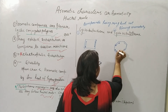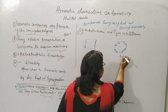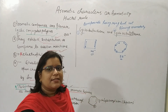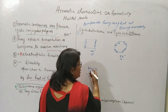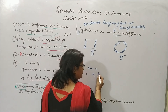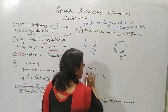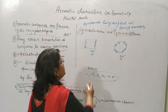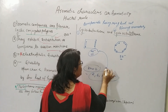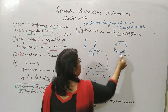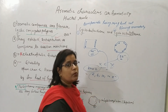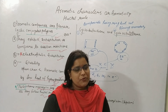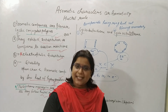In cyclotetraene, counting the pi electrons gives 8 electrons. Neither 4 nor 8 satisfies the 4n + 2 formula, so these two compounds do not show aromatic character. I hope you enjoyed my lecture. If you have any doubts, please ask in the comment section. Otherwise, please like, share, and subscribe. Thank you.